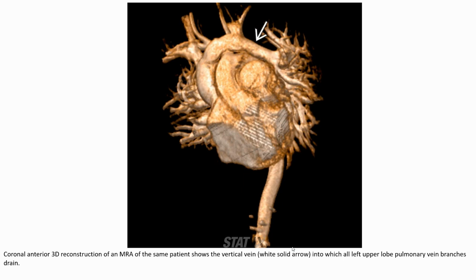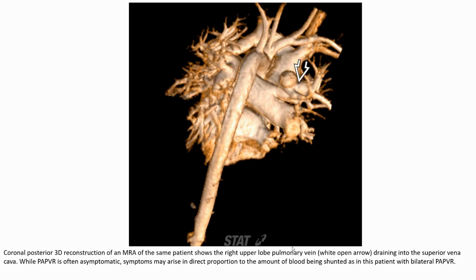Coronal anterior 3D reconstruction of PAPVR shows the vertical vein into which the left upper lobe pulmonary vein branches drain. Coronal posterior 3D reconstruction of PAPVR shows right heart chamber and pulmonary vein draining into the superior vena cava. While PAPVR is often asymptomatic, symptoms may arise in direct proportion to the amount of blood being shunted, as in patients with bilateral PAPVR.